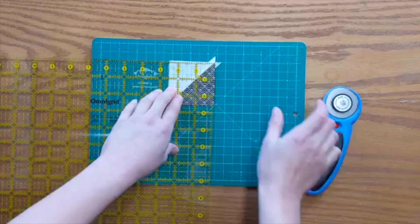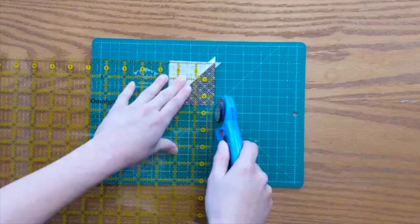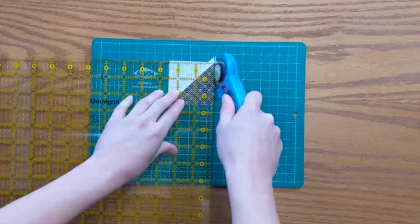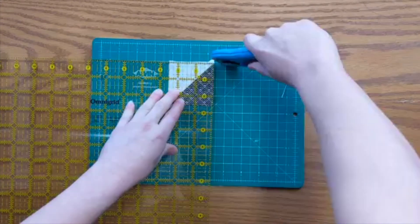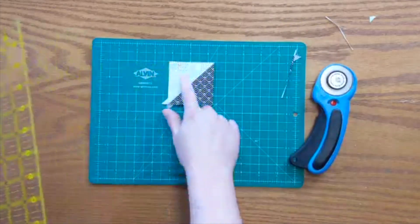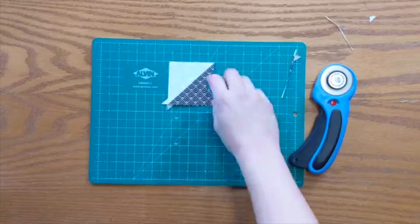Alright, I've got that all lined up. I'm going to go ahead and trim one this way and that way. Now I have two sides of my half square triangle perfectly trimmed.